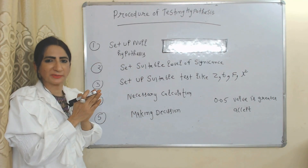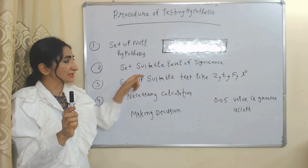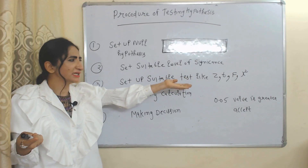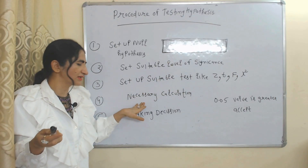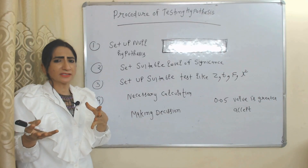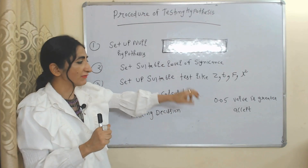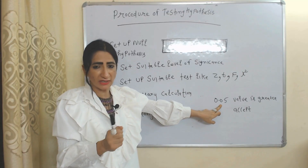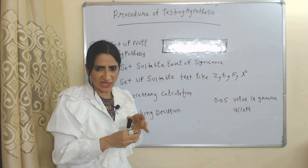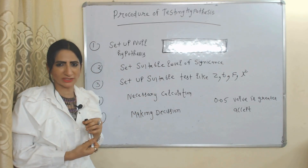Procedure of hypothesis testing: in the first step, set your null hypothesis. In the second step, set a suitable level of significance. After that, decide the test — whether Z, T, F, or chi-square. Then make necessary calculations. Finally, make the final decision: if the value is greater than 0.05, accept the null hypothesis, otherwise reject it. That is all about hypothesis testing — thank you so much for watching, bye, take care.